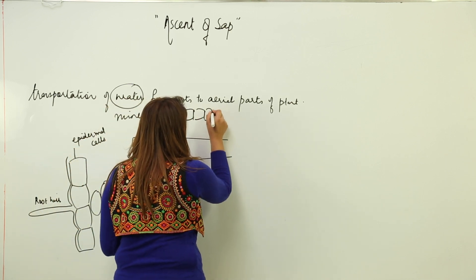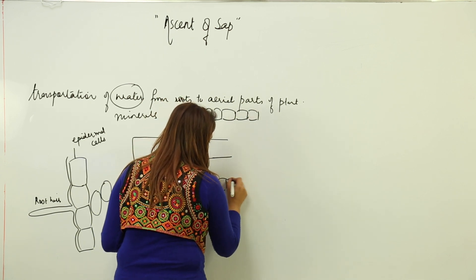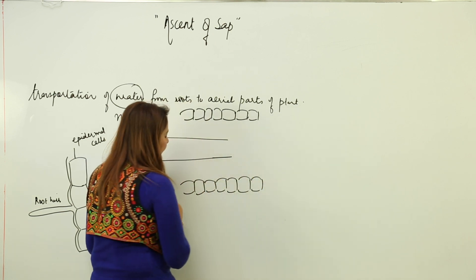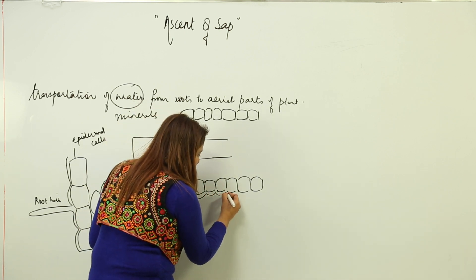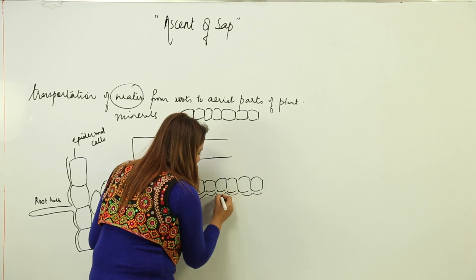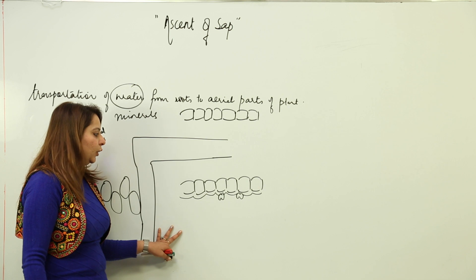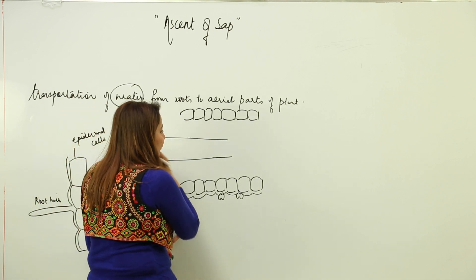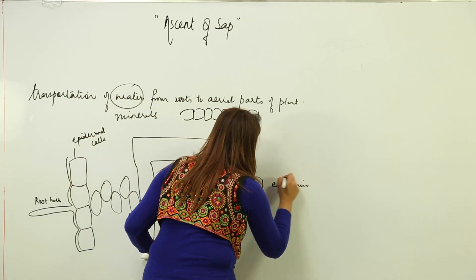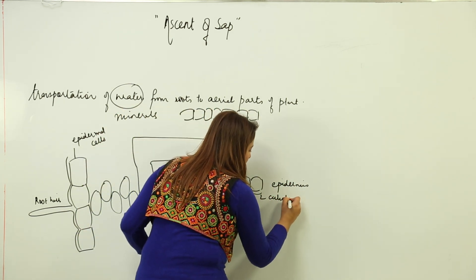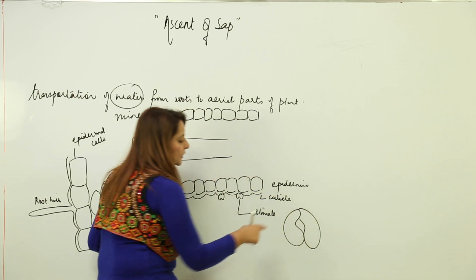The leaf consists of epidermal cells — upper epidermis and lower epidermis. It has a thin transparent layer of cuticle. At some points the cuticle is absent, and where it is absent we have kidney-shaped cells called guard cells, which form the stomata.